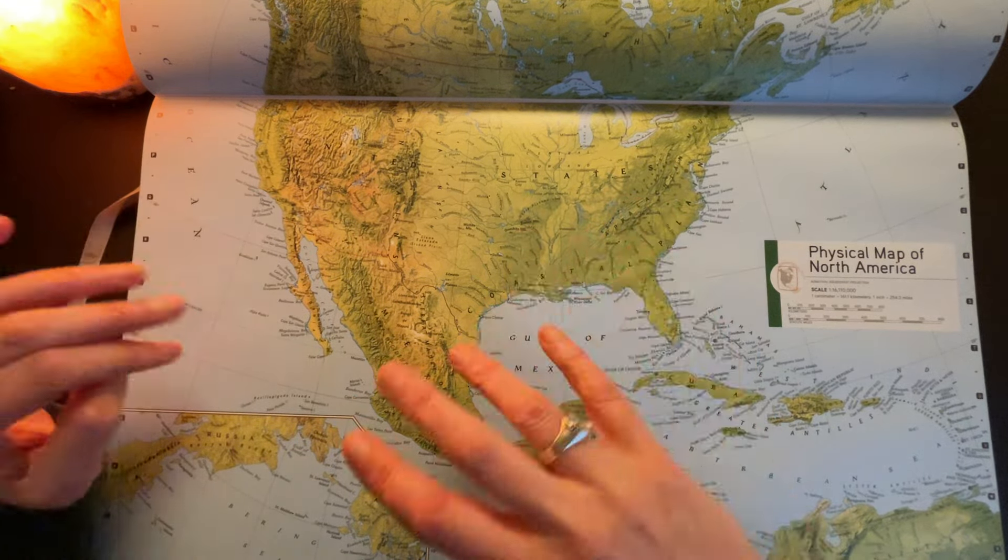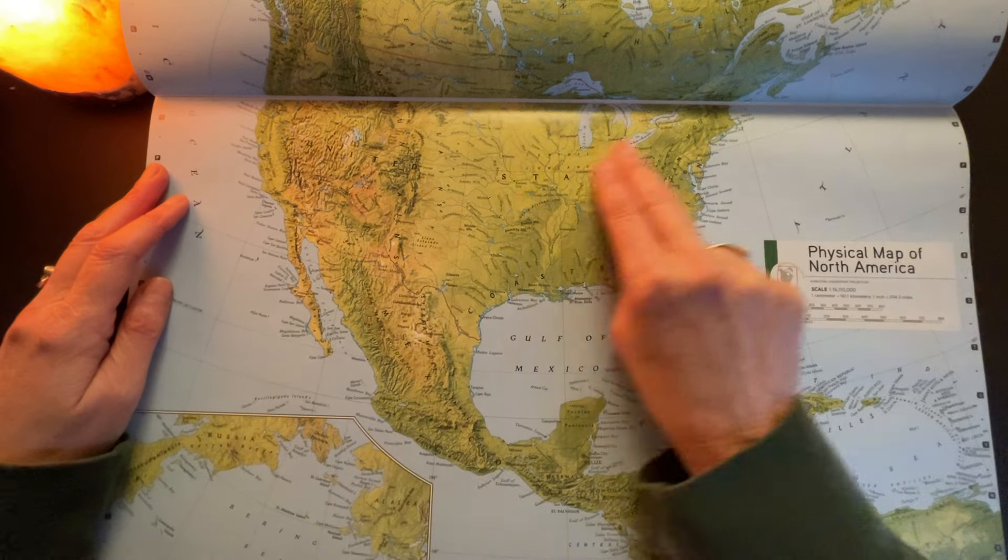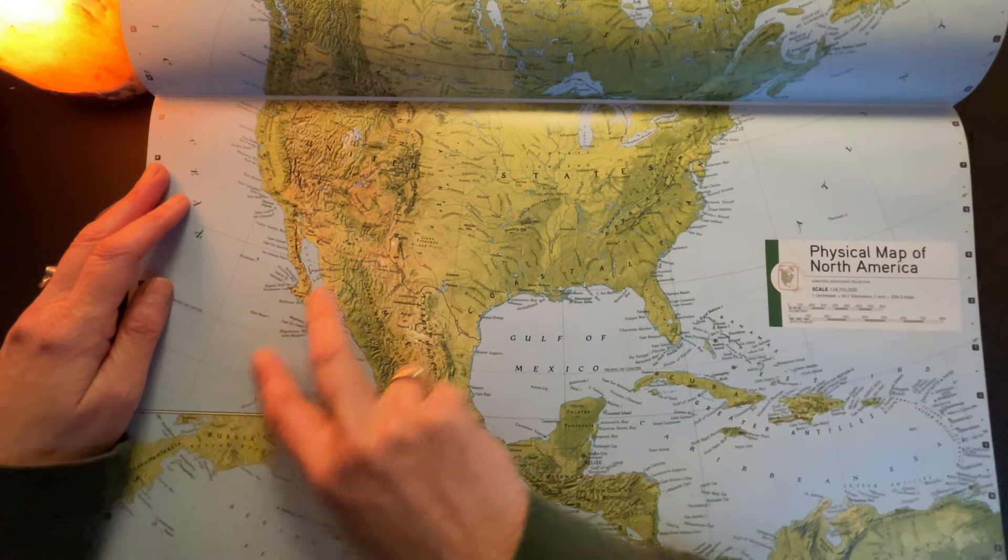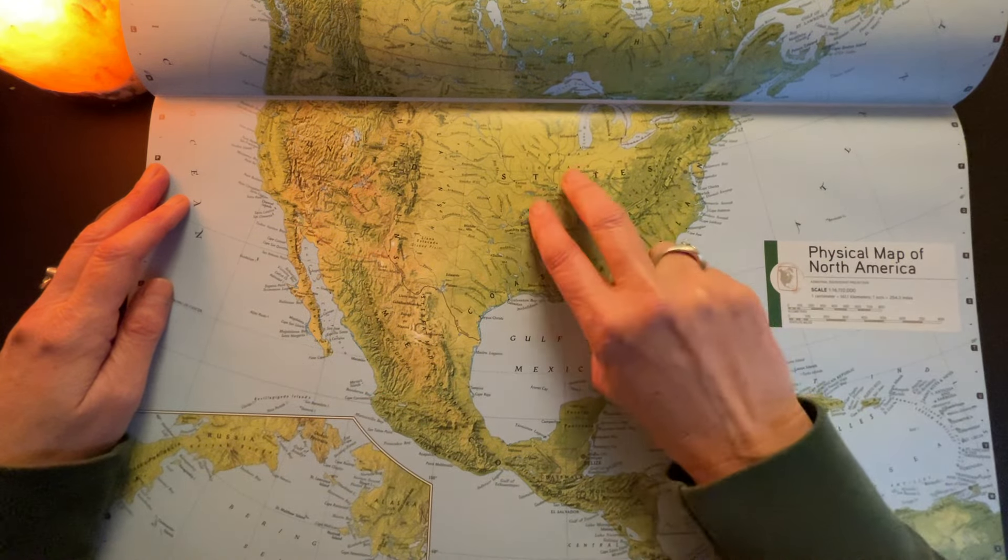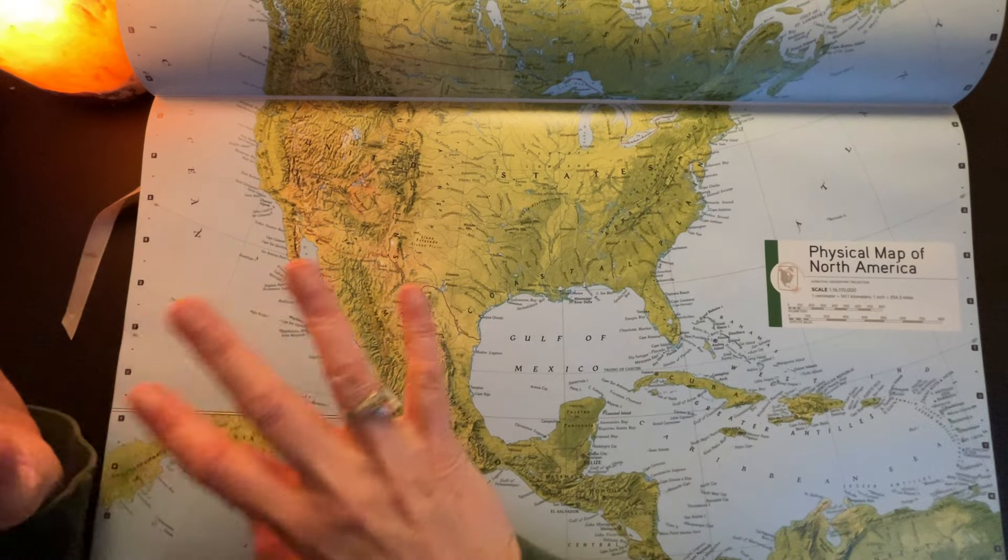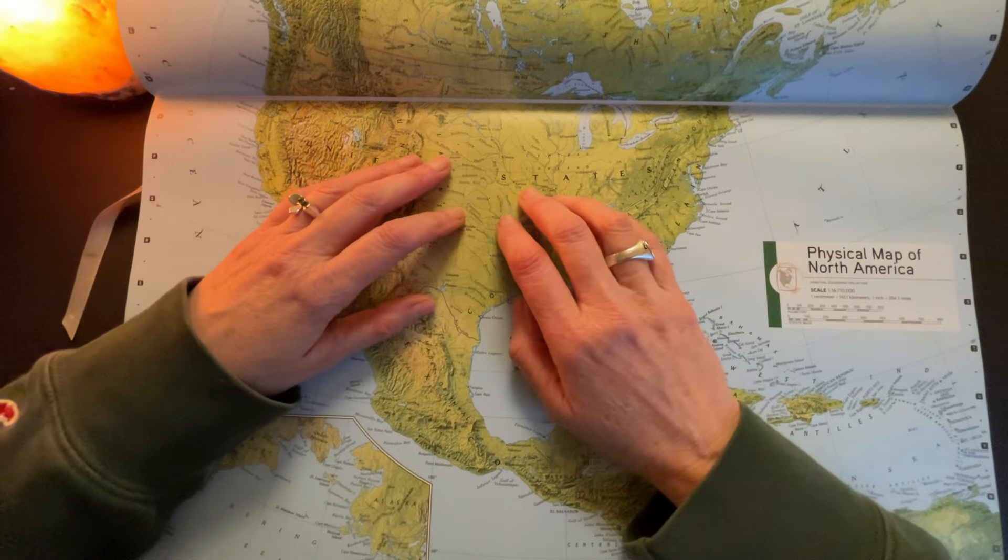The reason they're calling it that is because it's making a course that's sort of like a semicircle across the United States. It's also going through Mexico and I think maybe parts of Canada up here.